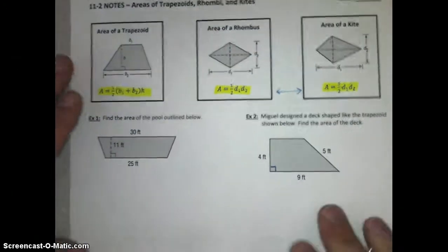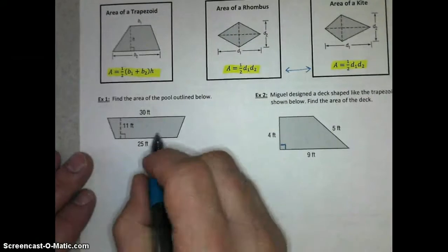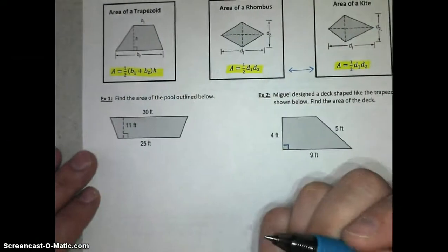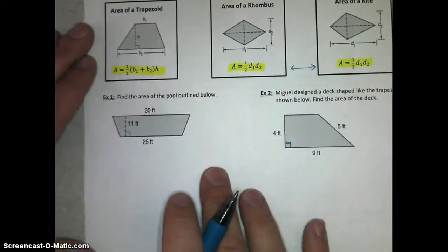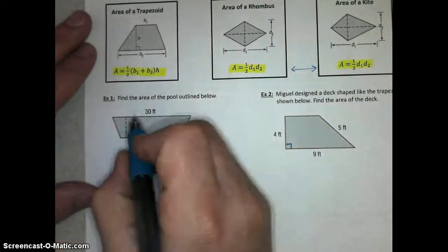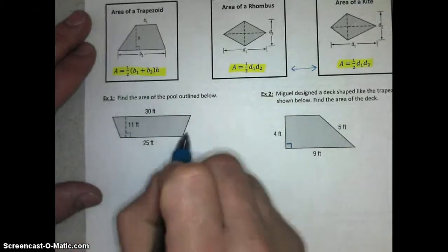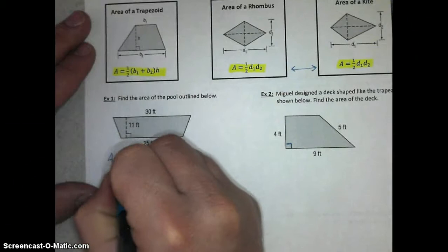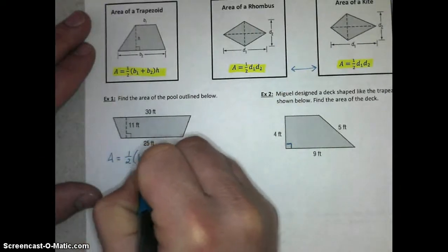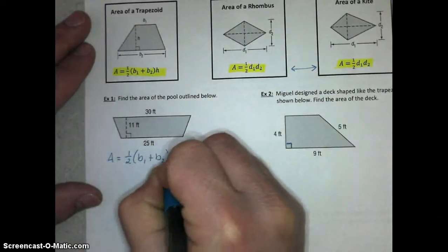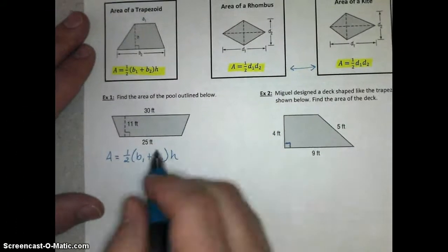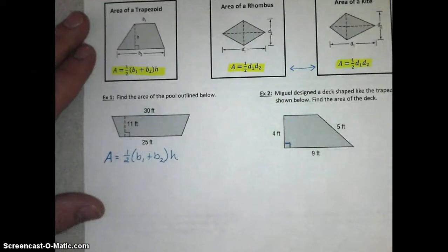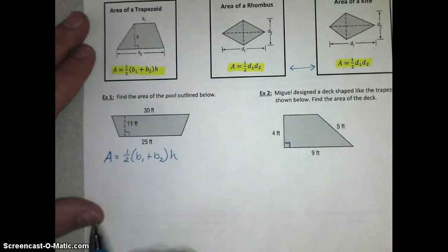Let's try example 1. This is an example where I'm going to help you set this up, but for the most part, you should be able to do these calculations, then you can check your answer. Remember that the area formula for this shape, this is a trapezoid, is this formula, so I want you to go ahead and write it in again.